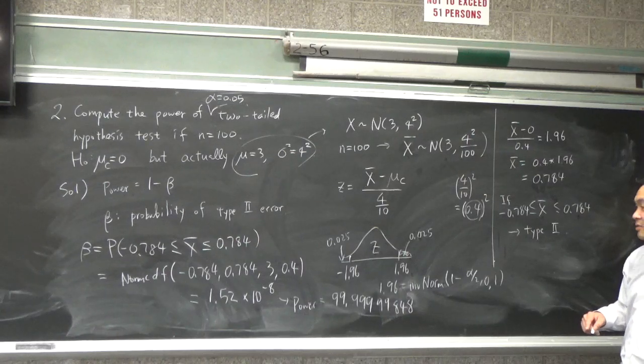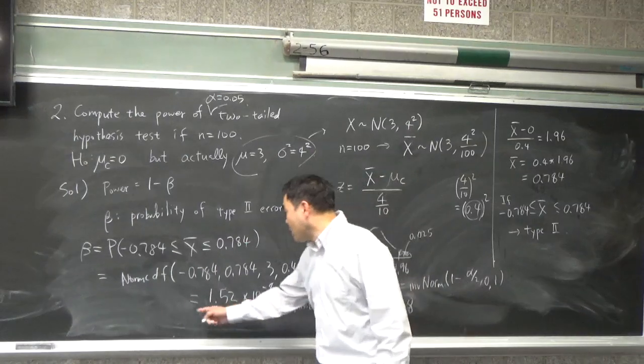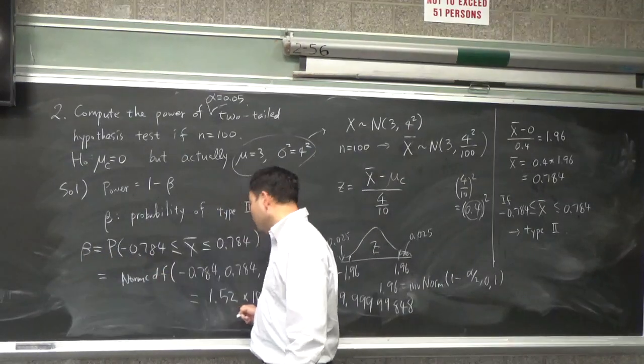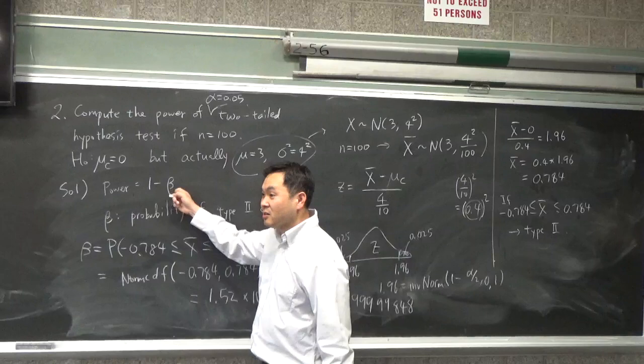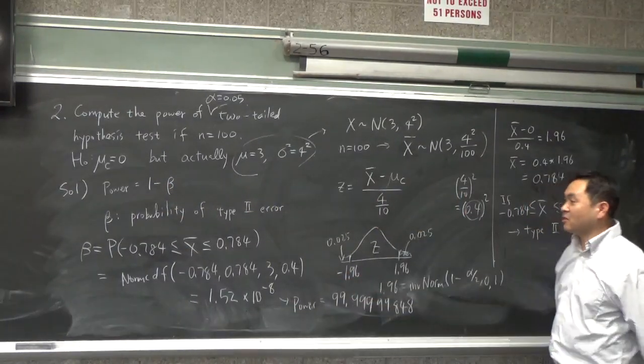Yes. What happened with the 1.52 times and the power? So this is your beta value, right? Once you get the beta value, you get the power as 1 minus beta. So you do 1 minus your answer.